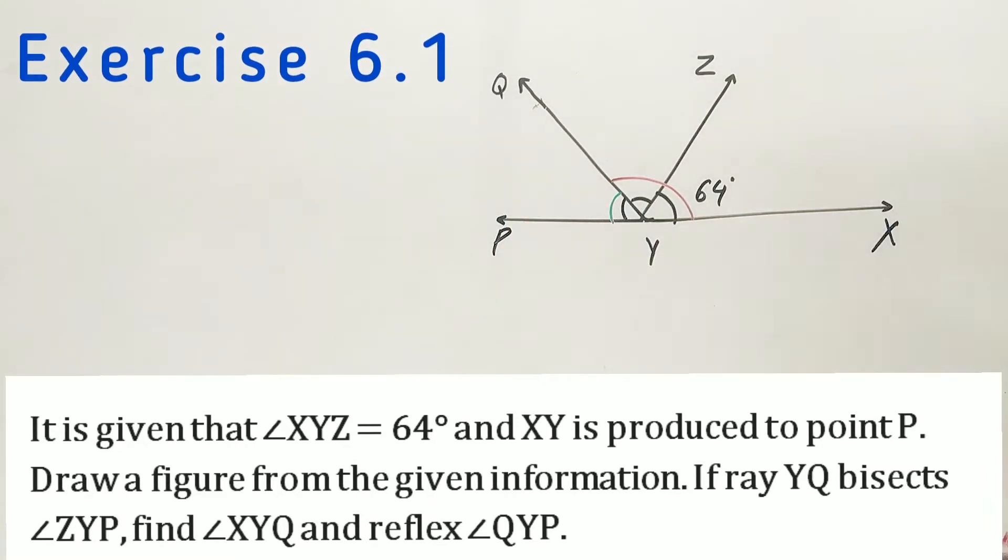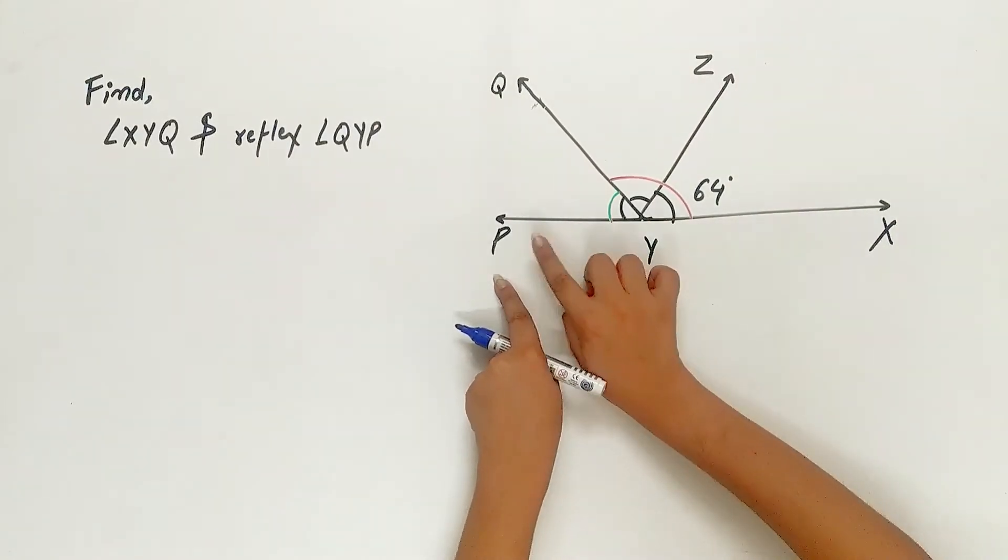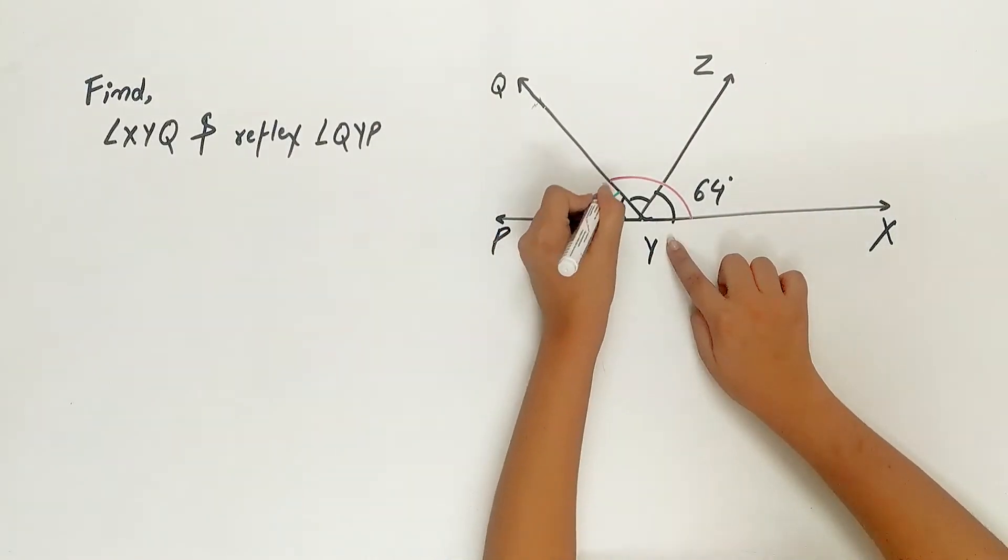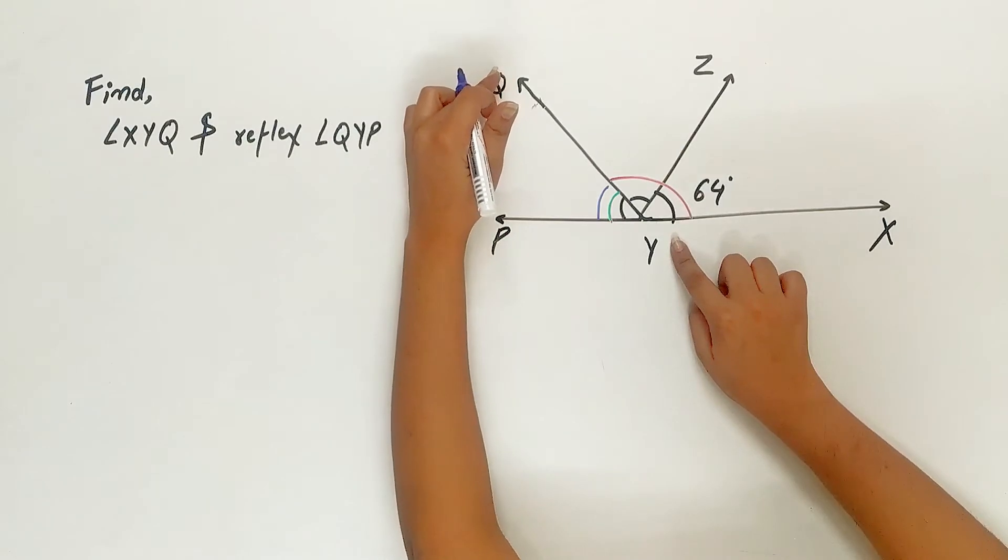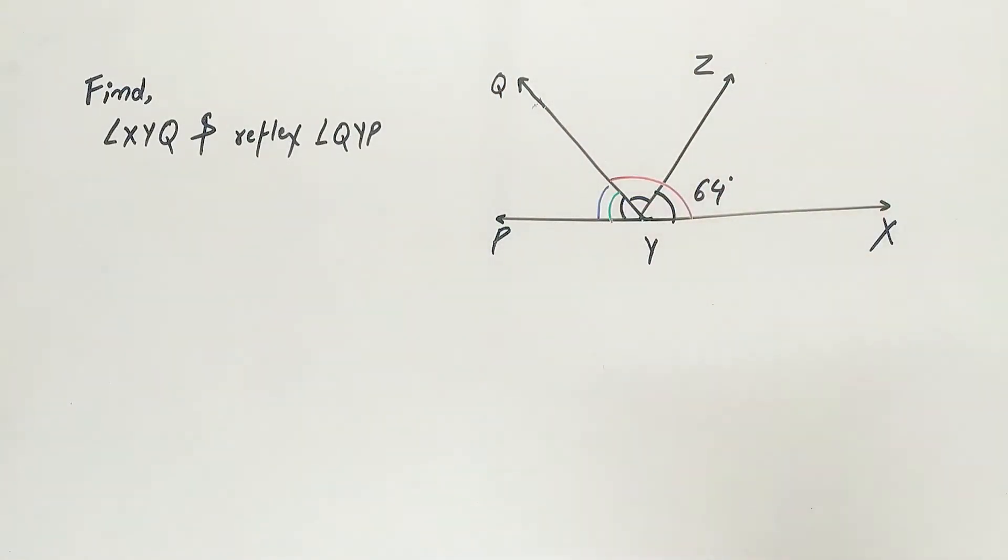So let's do it. PX is a line and angle PYQ plus angle QYZ plus angle ZYX forms a linear pair, all are equal to 180 degrees.